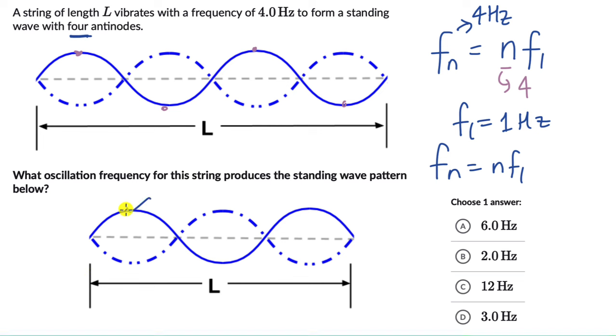There are 3 antinodes, 1, 2, 3, so this is the 3rd harmonic. So this is 3 F1, or 3 into 1, or 3 Hz. So 3 Hz oscillation frequency will produce the following standing wave pattern.